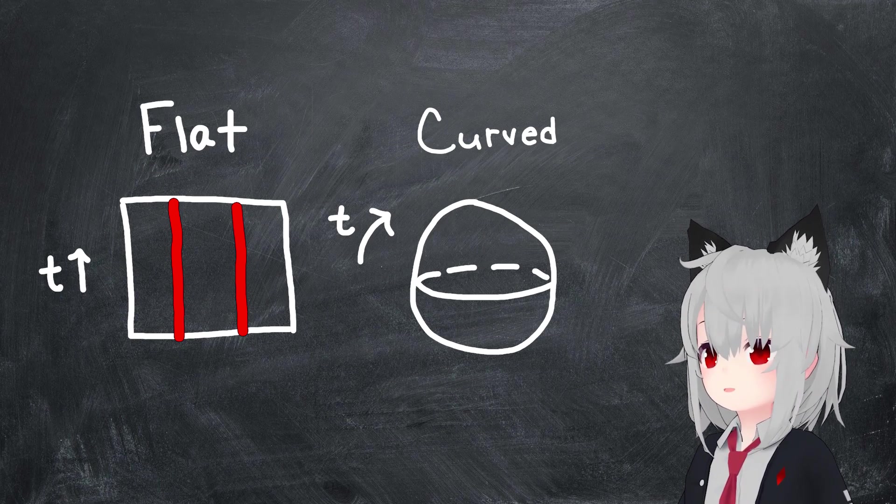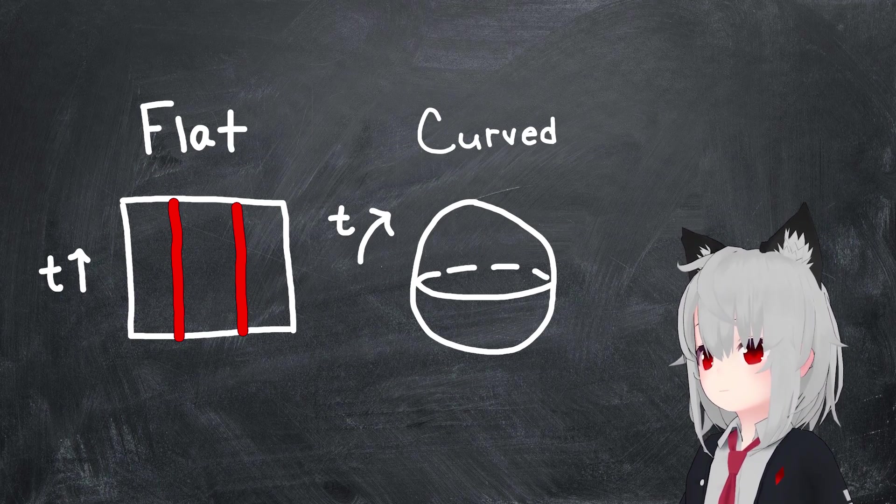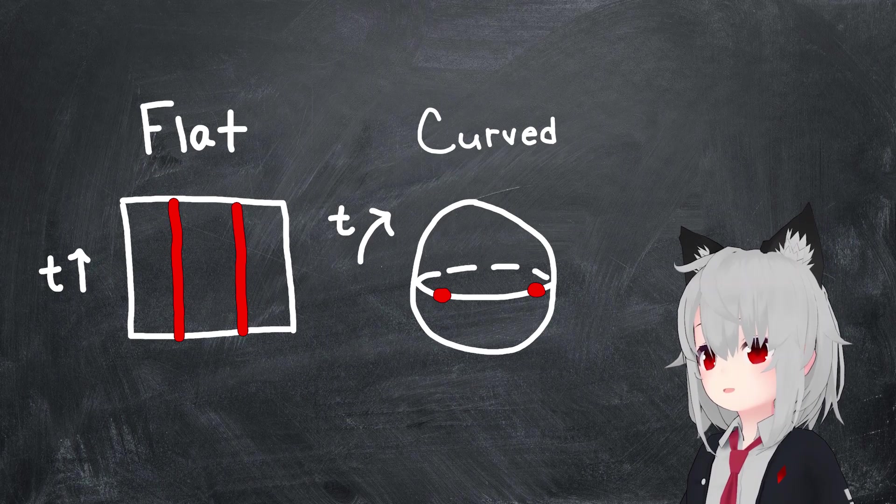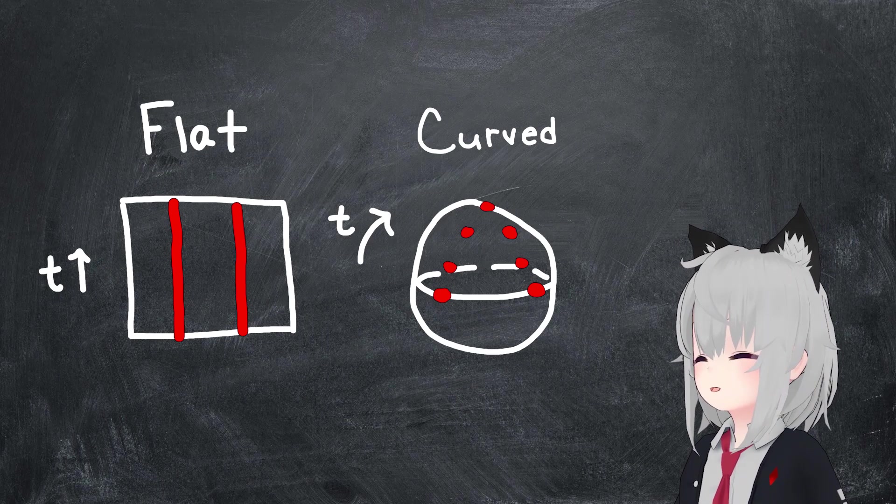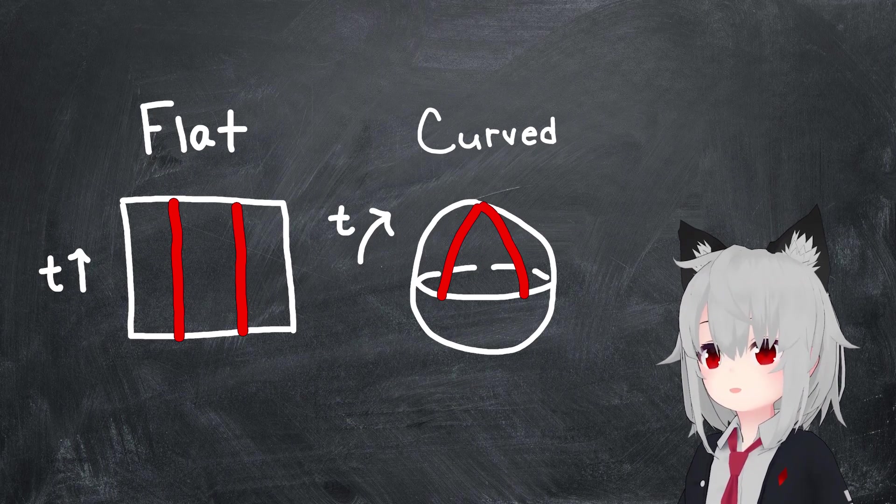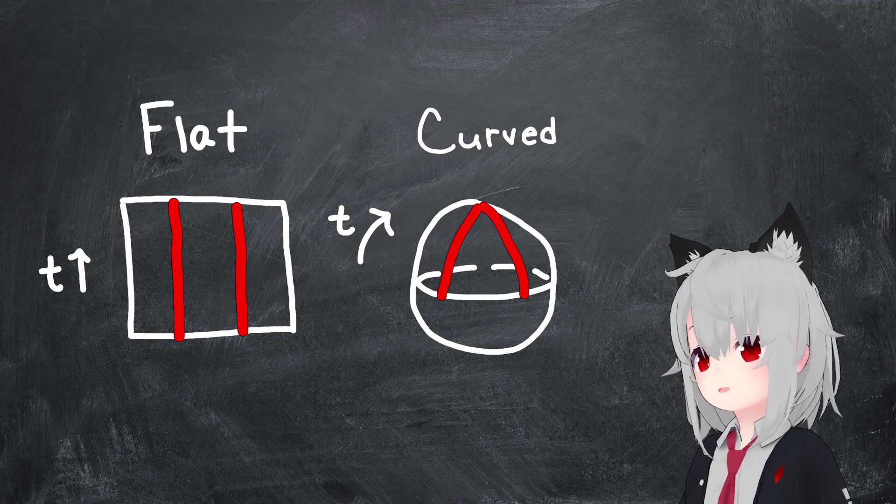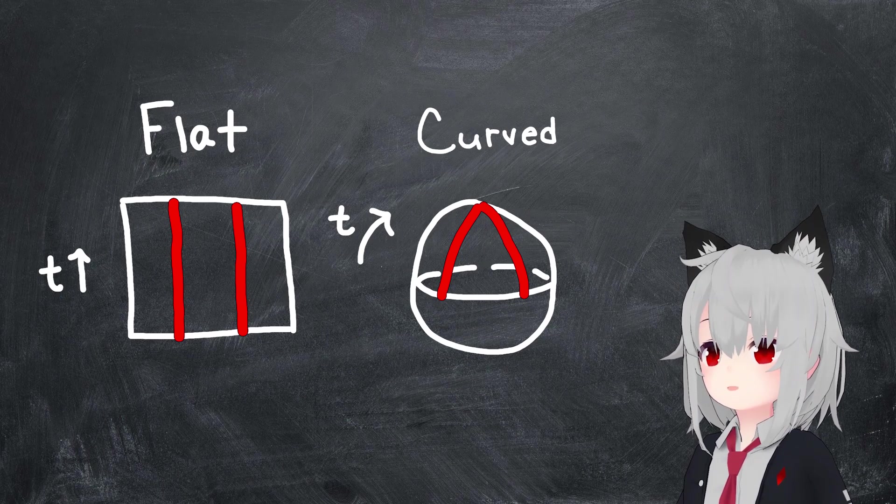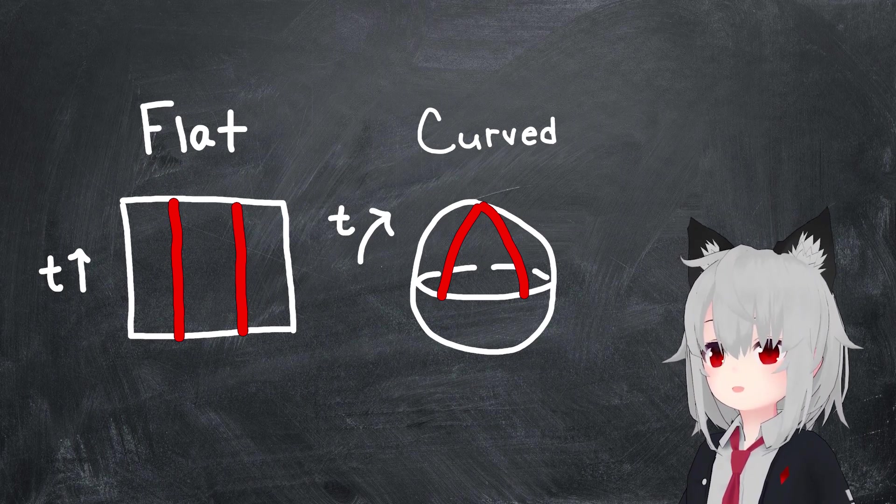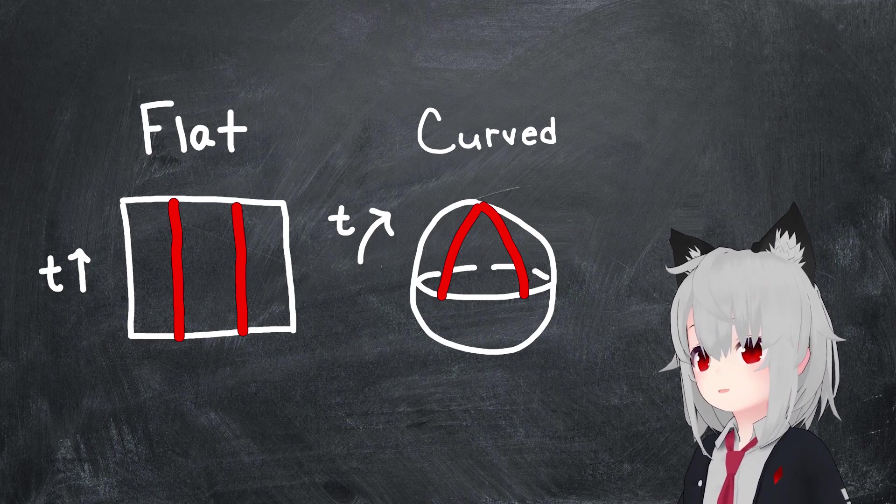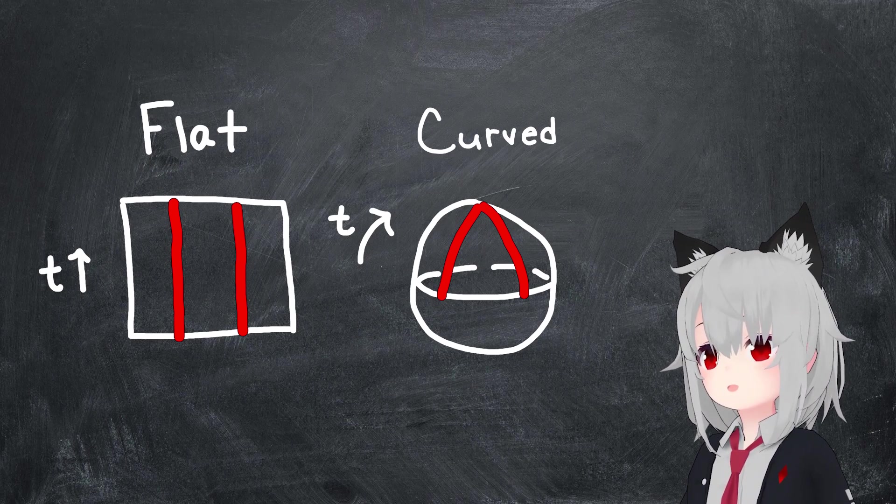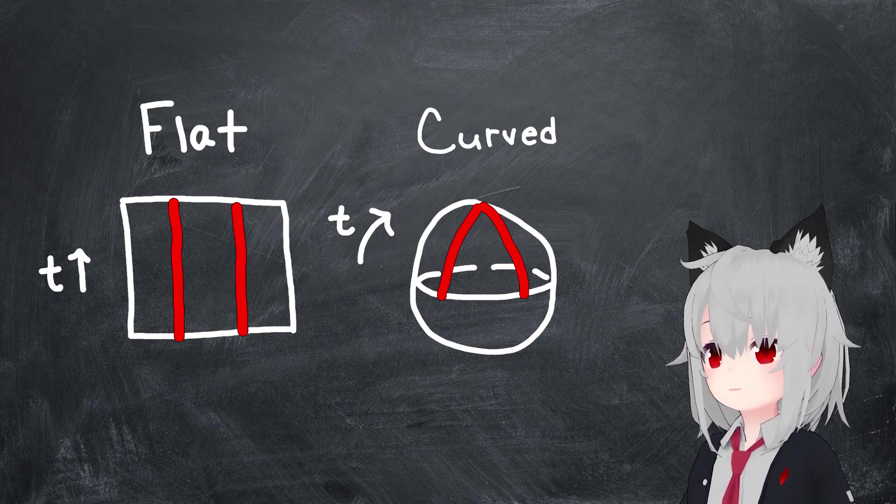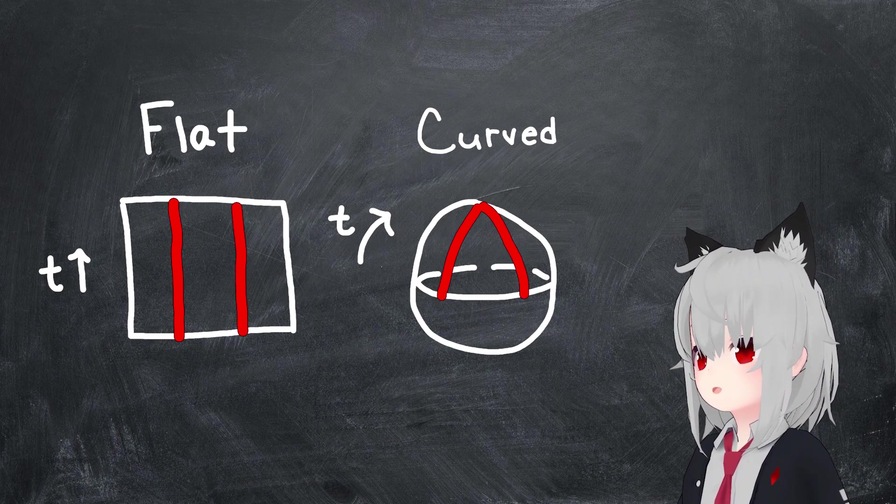But now, let's consider the curved spacetime. In this case, two objects initially at rest will travel forward in time, but now, as a result of the curvature of the spacetime manifold, will end up getting gradually closer until they eventually do intersect. To them, it would seem like there is some strange force pushing them closer together over time, even though it's really just the curvature of the spacetime manifold that they live in. And this is exactly how gravity works.